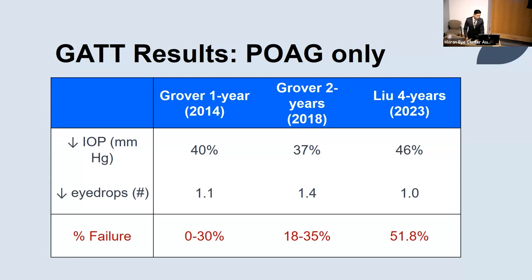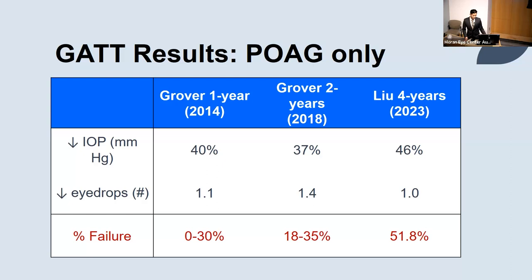What I found very significant is the percent of failure. Over four years, the percent of failure increased up to around 52 percent of patients — defined as IOP greater than 21 or IOP not being controlled. For those the procedure works for, it works well and stays. But for those it doesn't, there's a clear upward trend. The Kaplan-Meier survival curve shows a sharp increase in failure over the first six months, leveling off until the two-year mark, then a steady climb for both primary and secondary open-angle glaucoma.